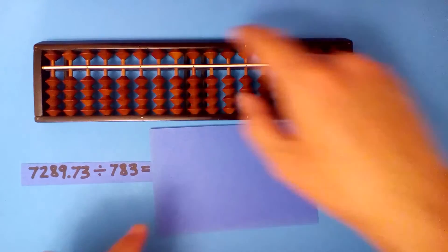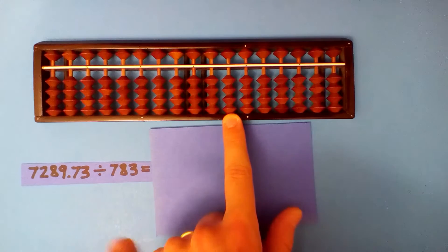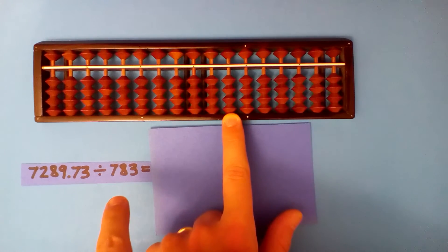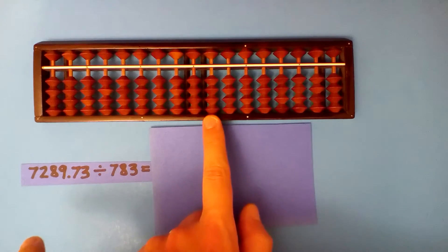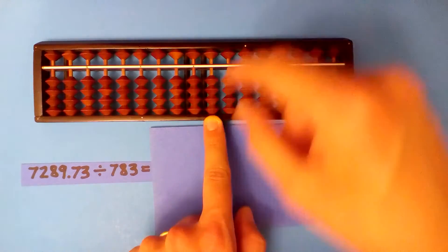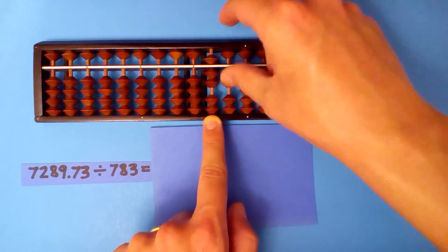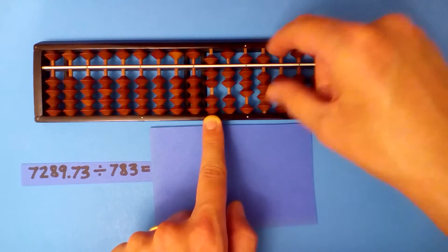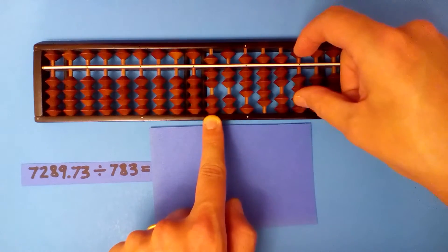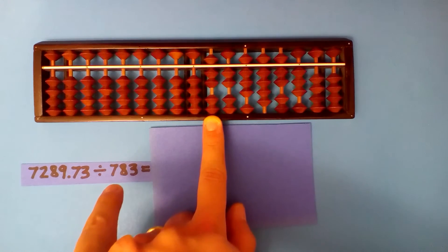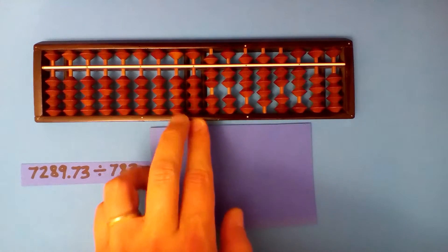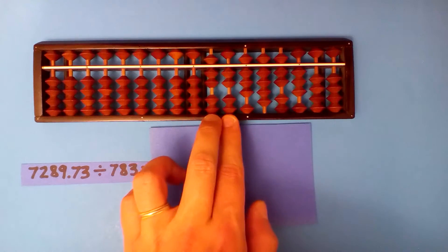How about this one? We start on the hundredths, but there's one more digit in the dividend, so we move over once and set it up here. 7289.73. And seven, but it's almost eight, so we'll divide eight into 72.